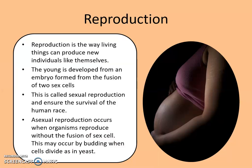Reproduction. Reproduction is the way living things can produce new individuals like themselves. The young is developed from an embryo formed from the fusion of two sex cells. This is called sexual reproduction and ensures the survival of the human race. There is also asexual reproduction. This occurs when organisms reproduce without the fusion of sex cells. This may occur by budding when cells divide, as in yeast, or in plants where we have budding and grafting.